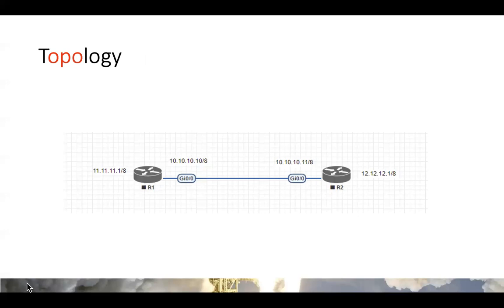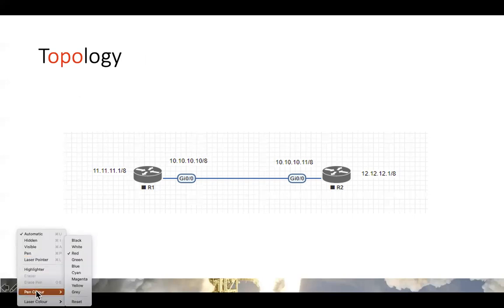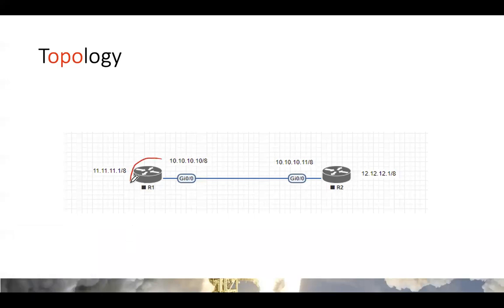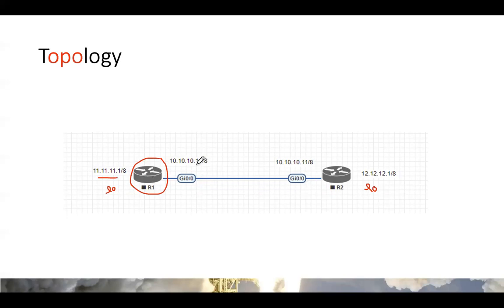To test it, I built a very simple lab in my personal lab environment with two routers. Router R1 is a Cisco IOS router with an IP address of 10.10.10.10 on Gig0/0, and router R2 has an IP address of 10.10.10.11. Both routers have an internal loopback interface — R1 has 11.11.11.1 and R2 has 12.12.12.1. We want 11.11.11.1 and 12.12.12.1 to connect to each other over the IPsec VPN tunnel.